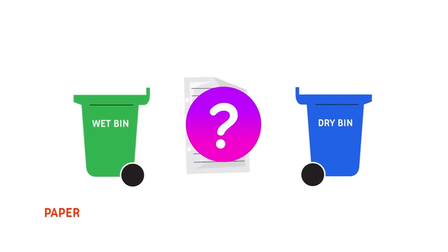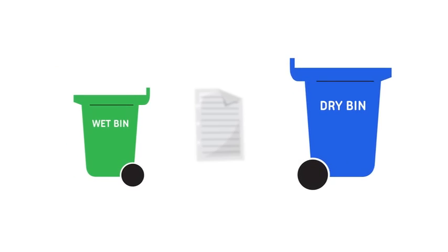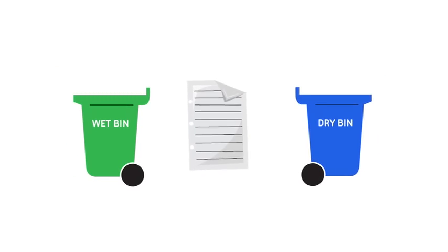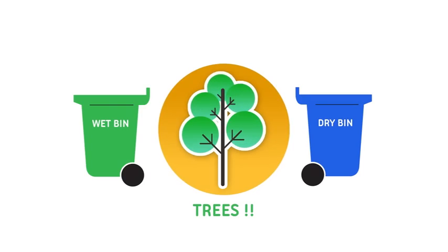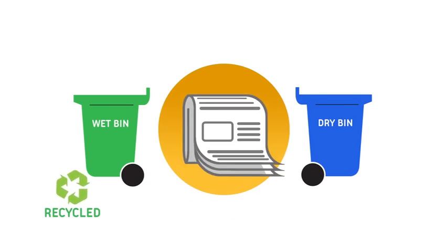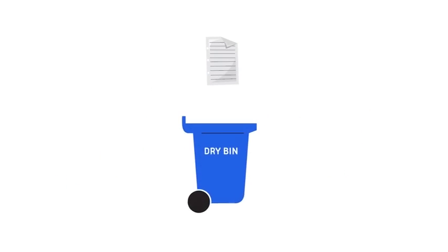Shall we do a few more? What about something like paper? Where does this go? Paper is a confusing one. Did some of you say wet and some say dry? Well, paper is made by man, but it is also natural. It comes from trees. But paper can be recycled to make other products, so we put it in the dry bin.